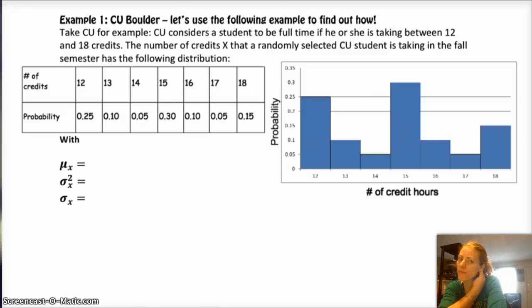All right, CU Boulder. CU considers somebody to be full-time if you're taking 12 to 18 credits. And so, down below is the distribution of credits that somebody might be taking. If you were to randomly select a student, a full-time student, the probability that they'd be taking 12 credits is 0.25. The probability that they're taking 13 credits is 10%. 5% are taking 14 credits and so on, right?